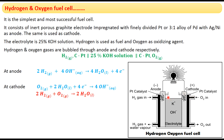We can represent the hydrogen-oxygen fuel cell as: H₂(g) | C, Pt || 25% KOH || C, Pt | O₂(g). The double vertical lines indicate the separation between electrode and electrolyte, with the electrolyte being the 25% KOH solution.